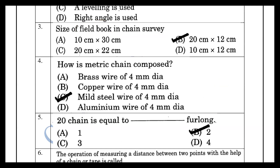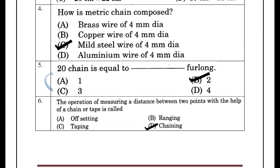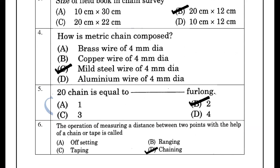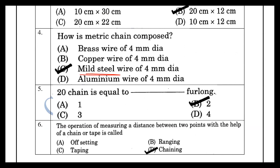Next, how is the metric chain composed? For a metric chain, it is made of mild steel wire of 4 mm diameter.